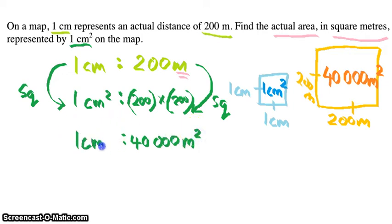So 1cm square on the map is actually 40,000 meter square in actual real life. So yeah, that's the way you do map, area on the map. Now can you dig that?